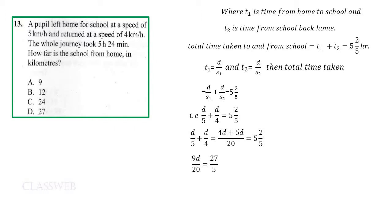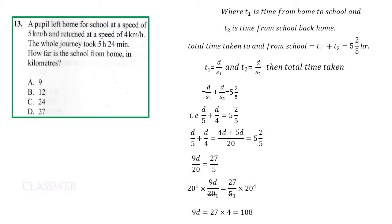Adding 4d plus 5d gives 9d over 20, which is equivalent to 27 over 5 after converting five and two-fifths into an improper fraction. We then cross-multiply by 20 on both sides to eliminate the denominator 20. On the left side we are left with 9d, and on the right side we get 27 multiplied by 4.